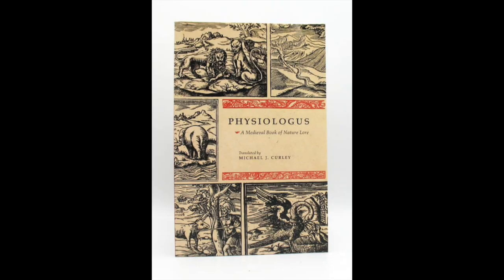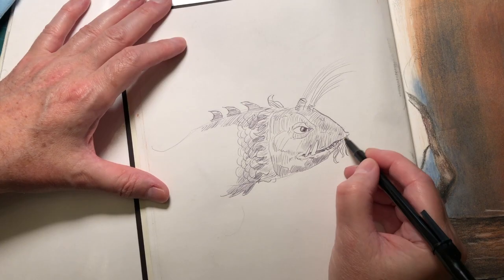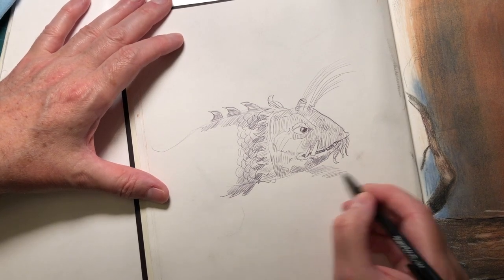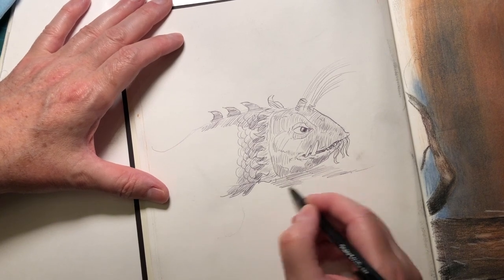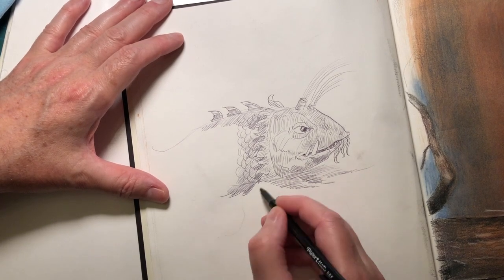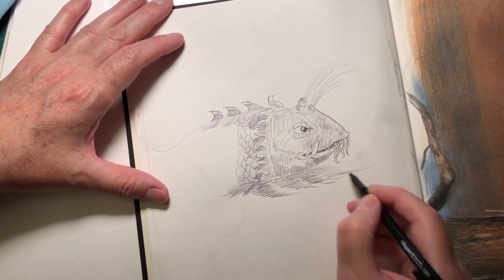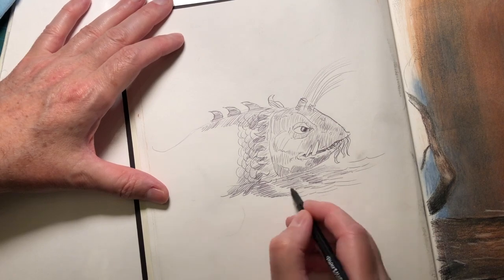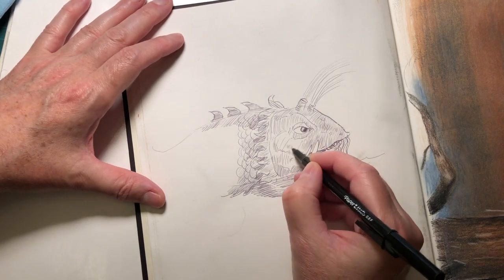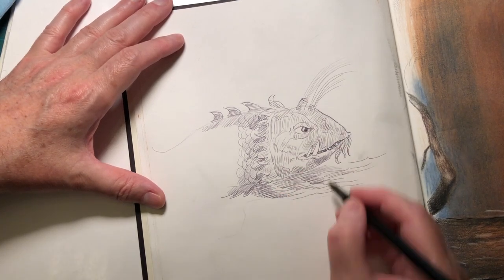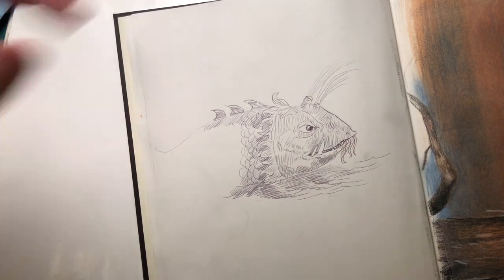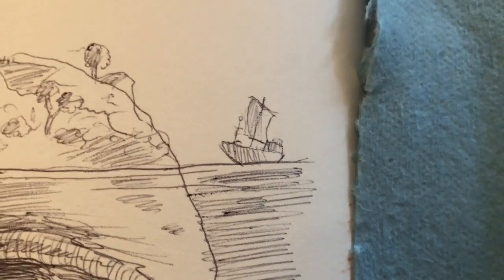The Physiologos is a great book — I highly recommend it. If you can get your hands on it, there are some wonderful translations. It was originally Greek, then translated into Latin. It basically has an entry on each page with an animal and some description of its symbolic significance.